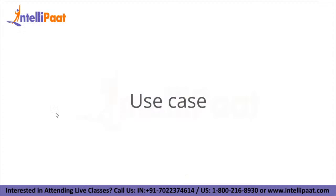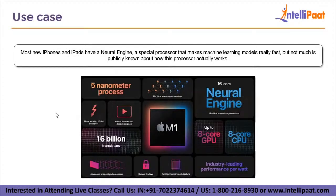Most new iPhones and iPads have a Neural Engine — a special processor that makes machine learning models really fast — but not much is publicly known about how this processor actually works, because Apple keeps everything secret. The Apple Neural Engine (ANE) is a type of Neural Processing Unit. It is like a GPU but instead of accelerating graphics, it accelerates neural network operations such as convolutions and matrix multiplications. Many companies besides Apple are developing their own AI accelerator chips. The most famous Neural Processing Unit besides the Neural Engine is Google's TPU, or Tensor Processing Unit.